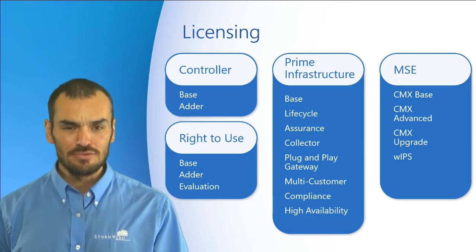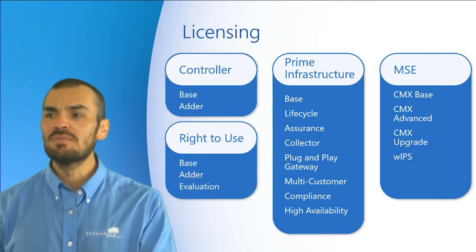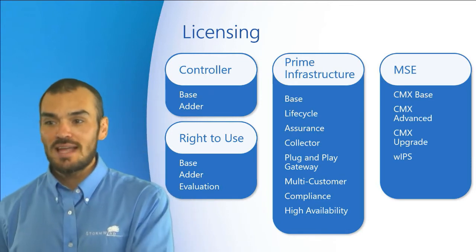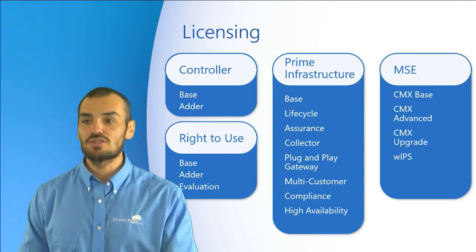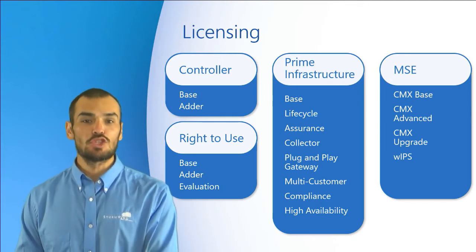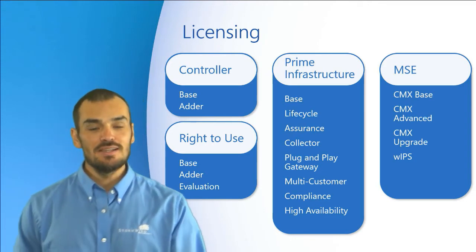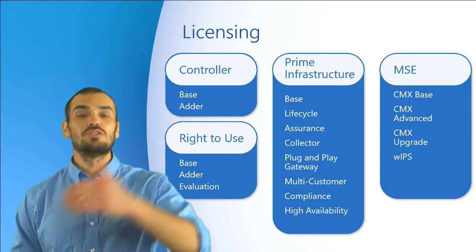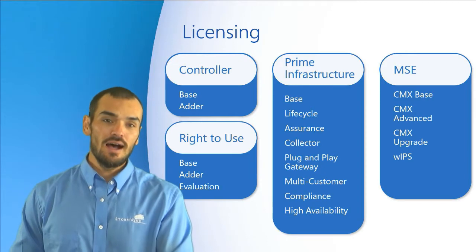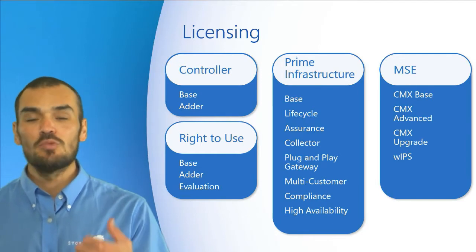The advanced license includes a number of sub-products: CMX Connect gives us a visitor Wi-Fi onboarding system platform; CMX Analytics and CMX Connectors provide location and location analytics that can tie into various third-party equipment, applications, or software. The upgrade license is intended to take base customers to the advanced license, so you don't necessarily have to buy a brand new license — you can simply do the upgrade. The Intrusion Prevention System leverages the Mobility Services Engine for both detection and mitigation of a wide variety of attacks.